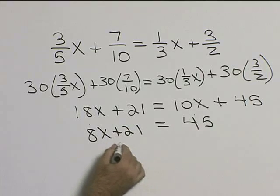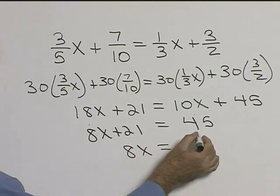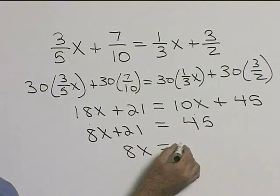Now if we subtract 21 from both sides, the twenty-ones will drop out and we'll have 8x equal to 21 from 45 gives us 24.